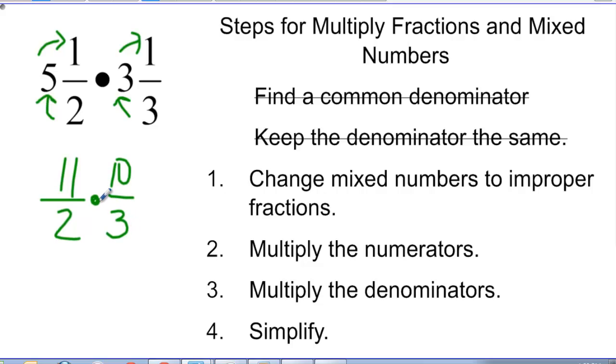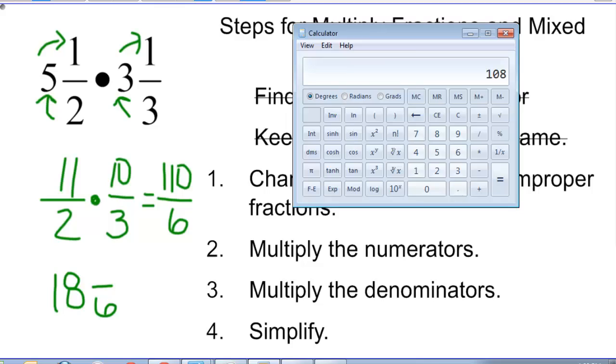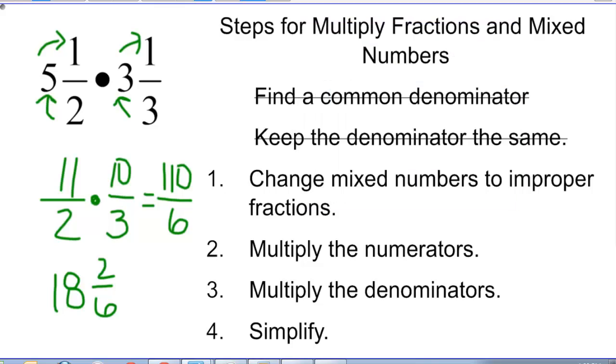And I multiply those together. I'm going to multiply my numerators together, multiply the denominators together, and simplify. 10 times 11 is 110, and 2 times 3 is 6. And now I'm just going to simplify. Let's see. So 110 divided by 6. I believe I would get 18 and 2 sixths. I'm just going to check that on a calculator. 18 times 6 gives me 108. And so now I do need to simplify because 2 and 6 are both divisible by 2. So I'm going to simplify this to 18 and 1 third.